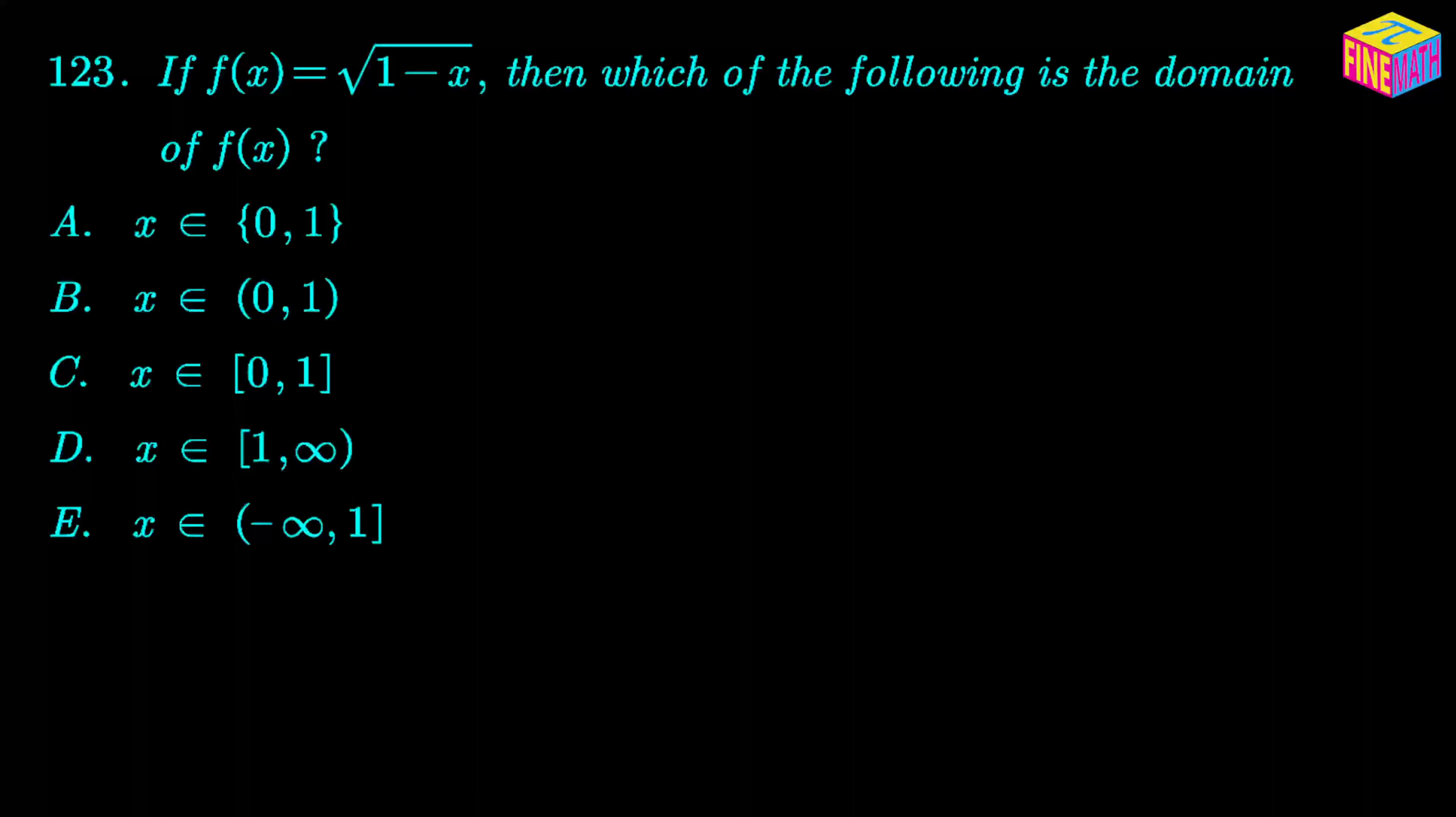Now if the function has to be a real function, then whatever is inside the square root has to be non-negative, because if the quantity inside the square root is negative, then the function value will be imaginary and we don't want that. We are talking about real valued functions.